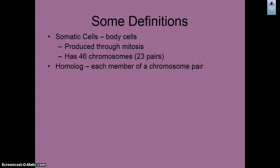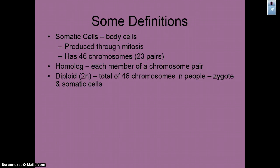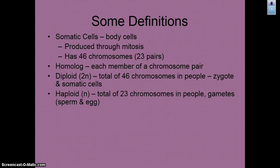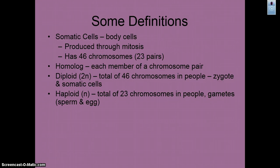A homologue is a member of a chromosome pair. The diploid, or 2N number, is the total number of chromosomes in all of our cells except for our sex cells — in humans, that's 46. The haploid is 1N, which is half of the diploid number; in humans we have 23, and these are only found in the gametes, which are the sperm and the egg.